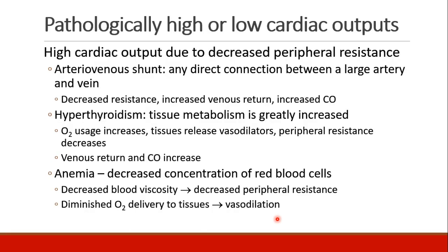Patients can have inappropriately high or low cardiac outputs. Cardiac output can be inappropriately high if peripheral vascular resistance is low. A patient with an arterial venous shunt — any direct connection between a large artery and a large vein — bypasses organ resistance, resulting in decreased resistance, increased venous return, and increased cardiac output. Hyperthyroidism is another example: tissue metabolism is greatly increased, oxygen is used very quickly, tissues release vasodilators to increase blood flow, peripheral resistance decreases, venous return increases, and cardiac output increases.